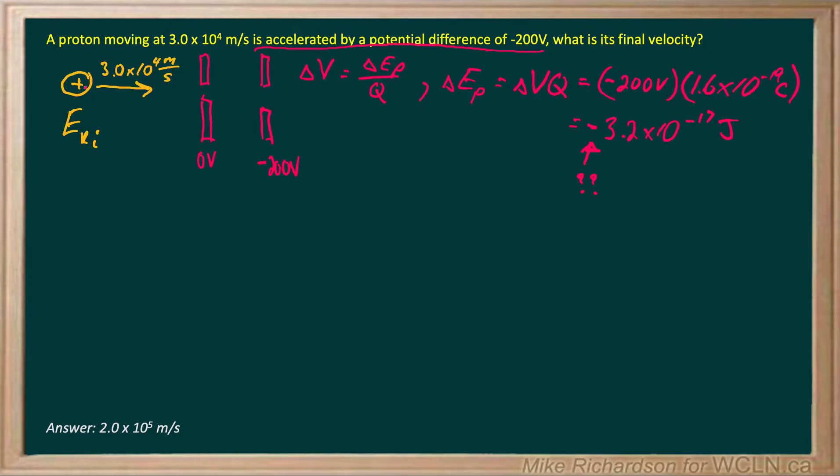Because this electron is positive, as soon as it crosses that little threshold, it's going to start to accelerate. It's going to start to speed up as it crosses the gap. So it's going to gain 3.2 times 10 to the negative 17 joules. So I don't really worry about the negative.